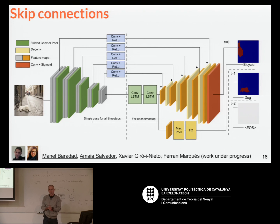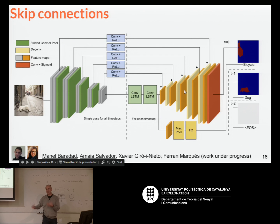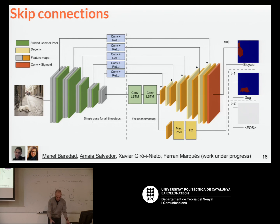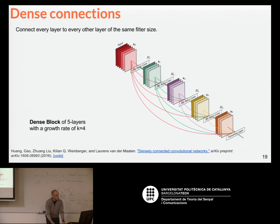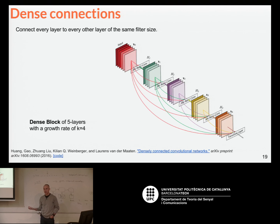One of my students, Manel, is working on these architectures with convolutional and deconvolutional parts and all these skip connections to improve performance — you can see that's the case. You can make things even more complicated by doing not just one skip connection but multiple skip connections — many of them. You'll get more parameters and need more computation, but results are also quite encouraging.